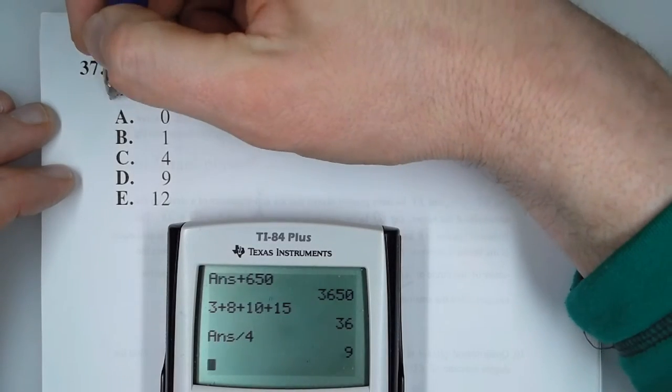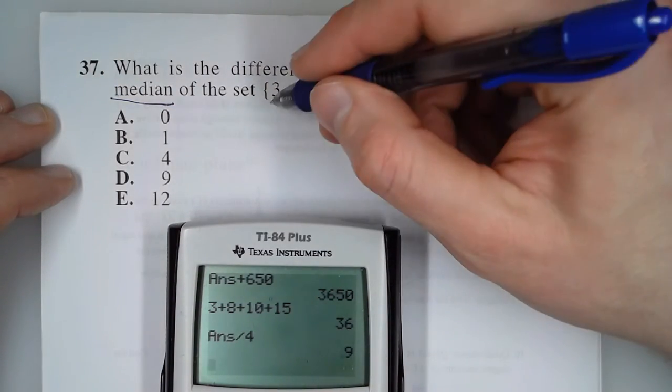What about the median? The median is the middle number. So if we cross off the biggest and smallest,